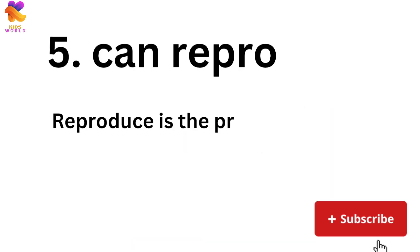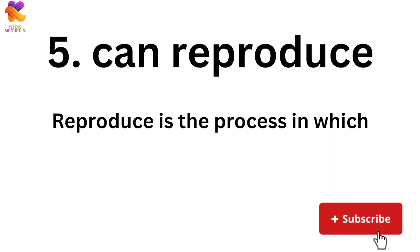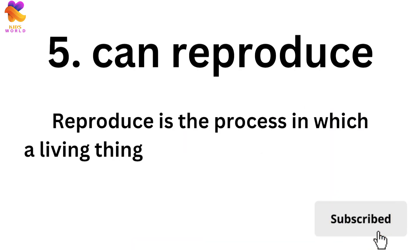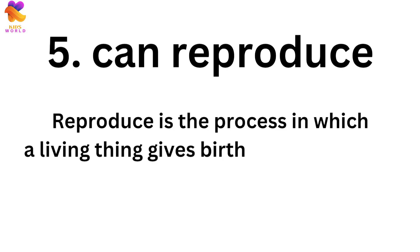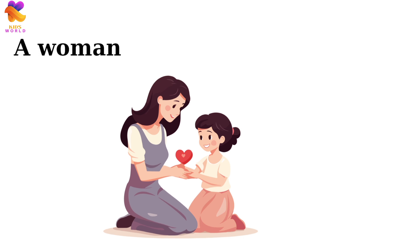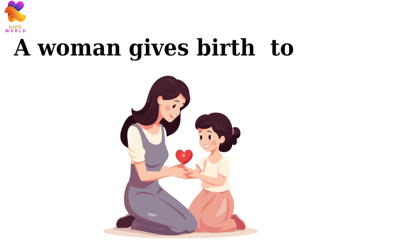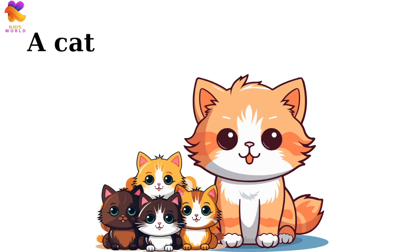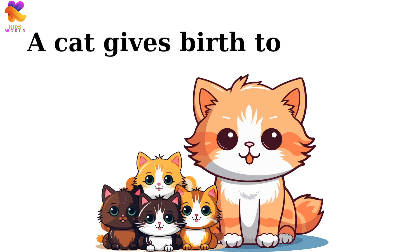Living things can reproduce. Reproduction is the process in which a living thing gives birth to a young one. A woman gives birth to a baby. A cat gives birth to a kitten.